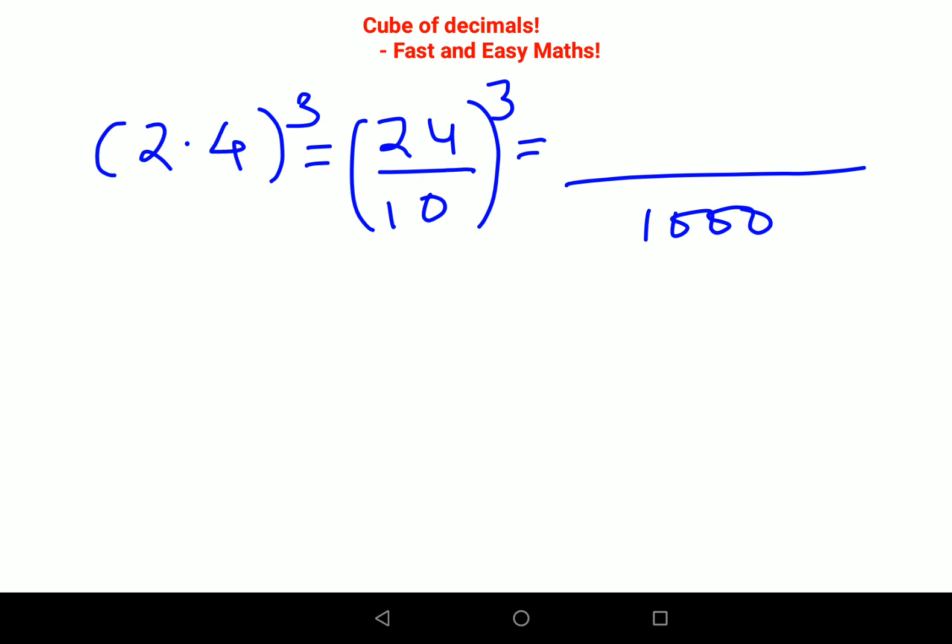For cubing, always remember first we'll take the first number cube. First number is 2, so 8. Then we do 2 into 4 into 3, multiply all these numbers, you get 24. Then multiply the first digit with 24, you get 48. Then multiply the second digit with 24, you get 96. Then do last digit squared, which is 64.